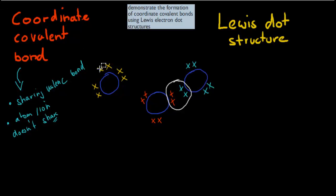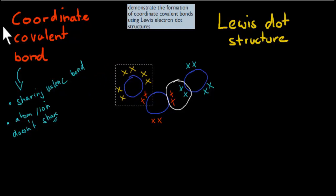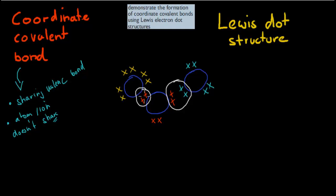And then we have another one coming in. So this is the one which is a bit unusual, because it will come in and it will receive these two electrons. So the red one will share with the yellow one, but the yellow one gives nothing back, nothing in return. And there is a reason why — because now the yellow one also has eight electrons, so its outer shell is complete and it's happy and stable. So that was the reason why this happens.